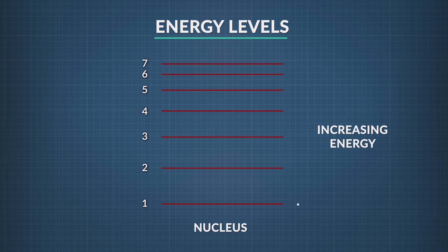Energy increases from the bottom of the diagram to the top. The numbers refer to the electron shells that surround the atom's nucleus.